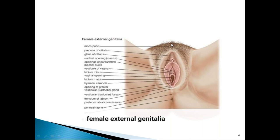The mons pubis area is an inverted triangle in shape. After puberty or nearing puberty, the mons pubis is covered with curly coarse hairs, which are staged accordingly as secondary sexual characters using Tanner staging. This is the mons pubis or mons veneris, and these are the two major folds called labia majora.